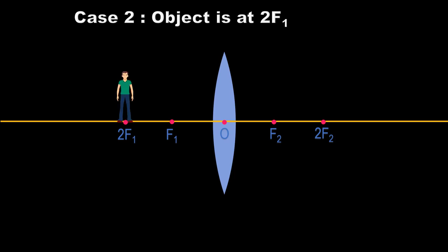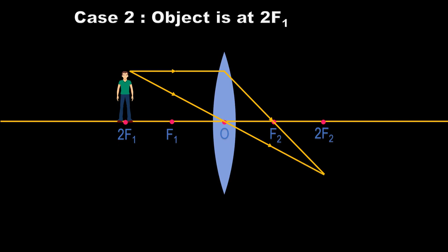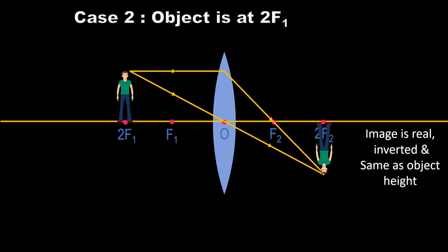Case 2: when the object is at 2F1. Consider the same two rays — the ray parallel to the principal axis passes through F2, and the ray through the optical center O goes straight. The intersection point represents the image. The image is real, inverted, and the same size as the object. The position of the image is exactly at 2F2.